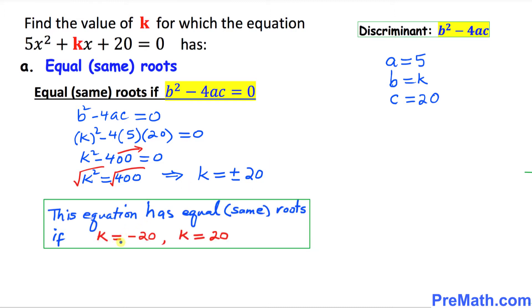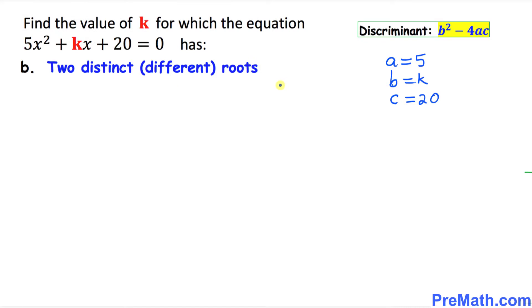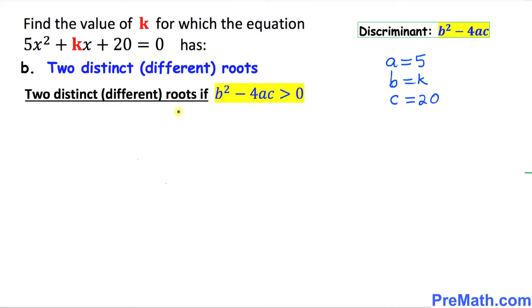Taking the square root of both sides, we get k equals positive or negative 20. So k equals negative 20 is our answer. In the next part, we are going to find the value of k if the equation has two distinct or different roots. In this case, the discriminant b squared minus 4ac must be greater than 0. Filling in the values: k squared minus 4 times 5 times 20 is greater than 0.